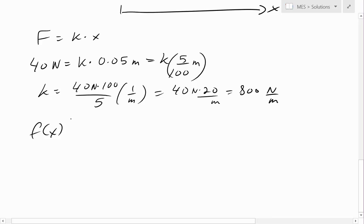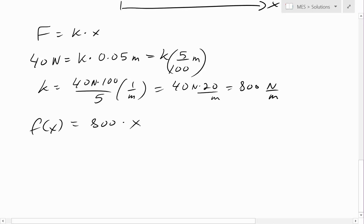So now we have our force, f(x), equals 800 times x, where the units of this 800 are newton over meter. When you multiply by meter, you just get newton's force. So this is our function.